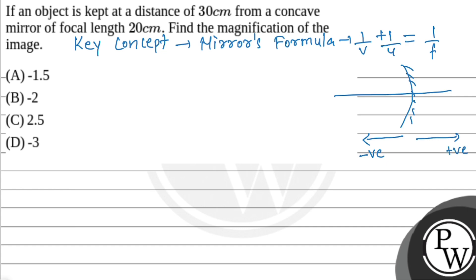The object is on the left side here at 30 cm. So the value of u equals minus 30 cm, because the left side is negative.